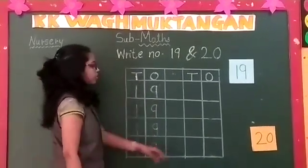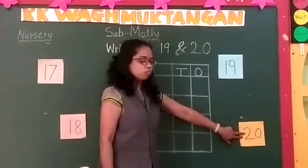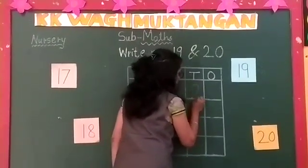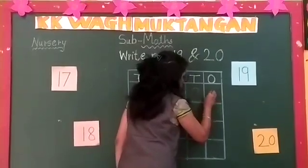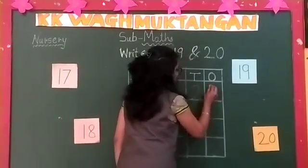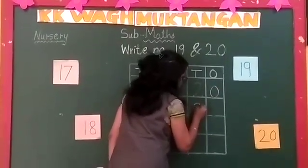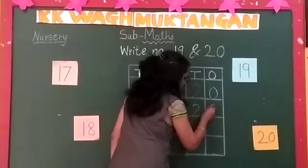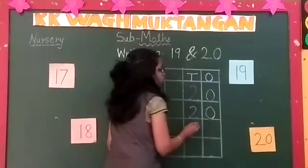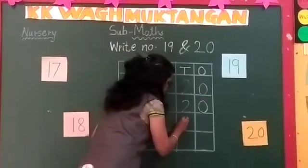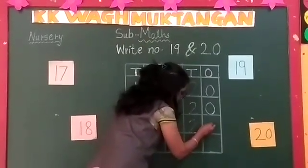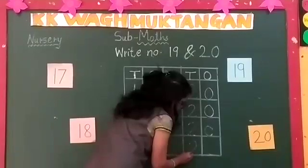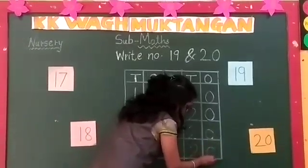Now, number 20. 10 and 10, 20. Write number 2 in the 10's column and number 0 in the 1's column. 10 and 10, 20. Write number 2 and 0.